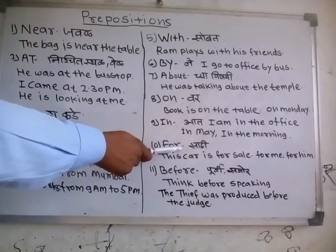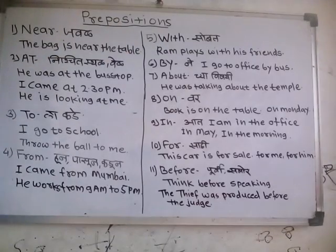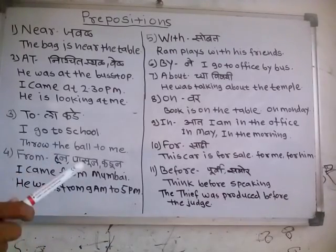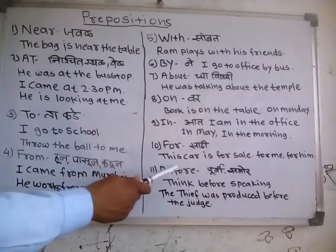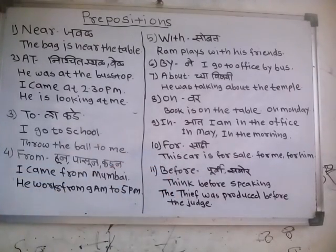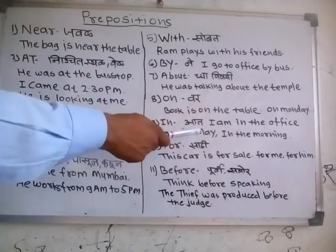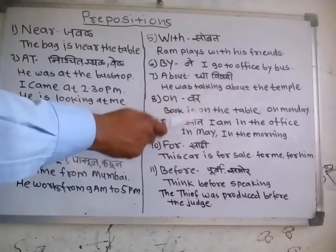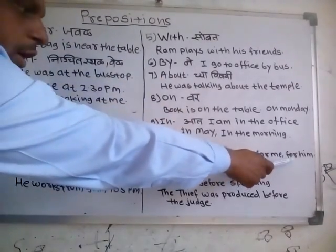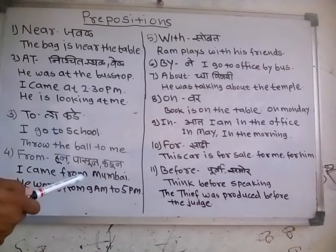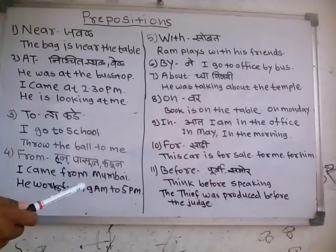Next is 'for'. 'For' is used to show the relationship between the subject and a particular thing — it shows the purpose of the action. For example: This car is for sale, meaning the purpose of the car is to be sold. We also use 'for' with all pronouns: for me, for him, for her, for us, for them, for you, for it. In this way we use 'for' to show the relationship with pronouns.